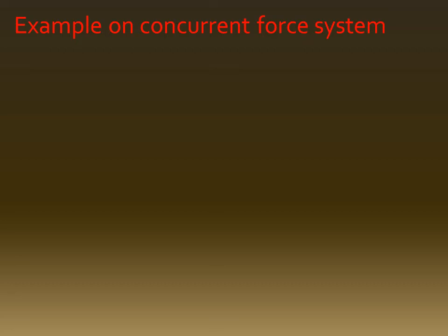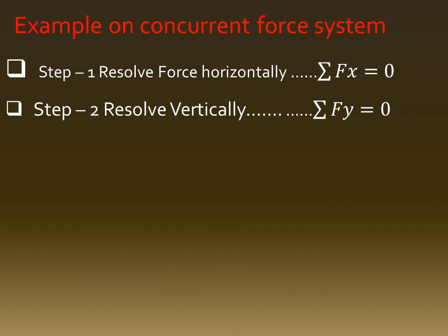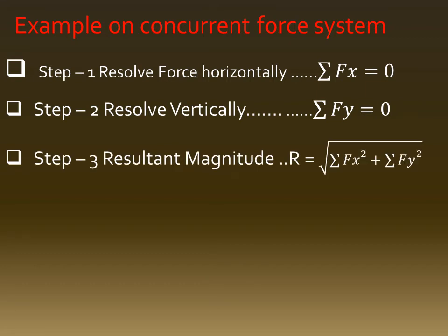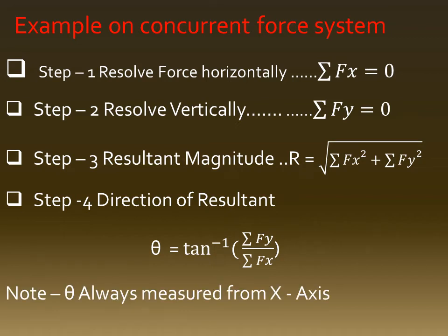Steps to solve a concurrent force system — Step 1: resolve all forces horizontally and calculate ΣFx. Step 2: resolve all forces vertically and calculate ΣFy. Step 3: calculate resultant magnitude R = √(ΣFx² + ΣFy²). Step 4: find direction of resultant — θ = tan⁻¹(ΣFy / ΣFx), using values from Steps 1 and 2. Theta is always measured from the horizontal x-axis.